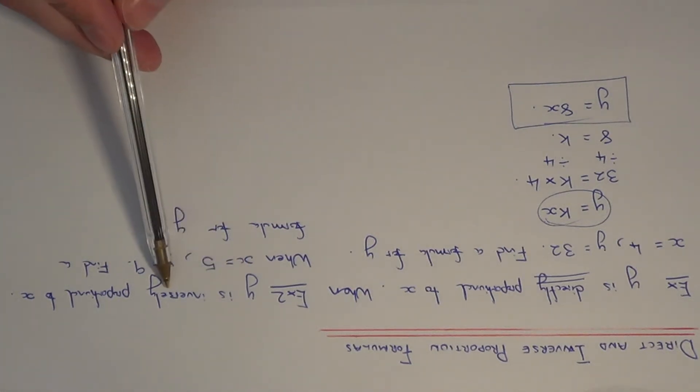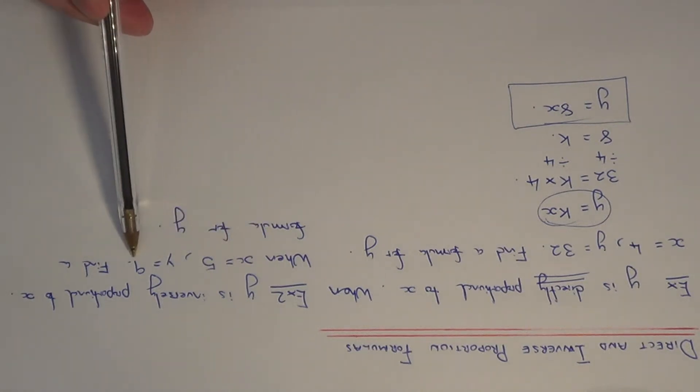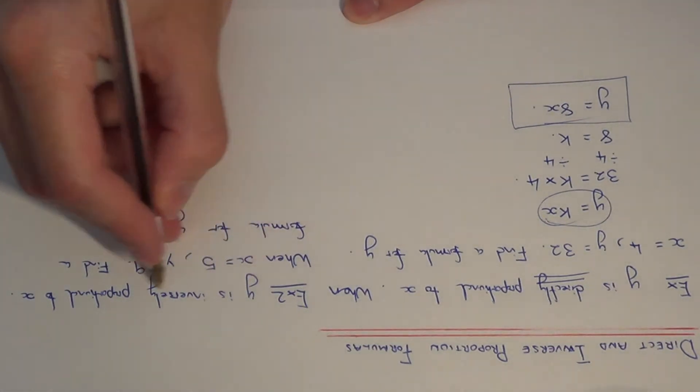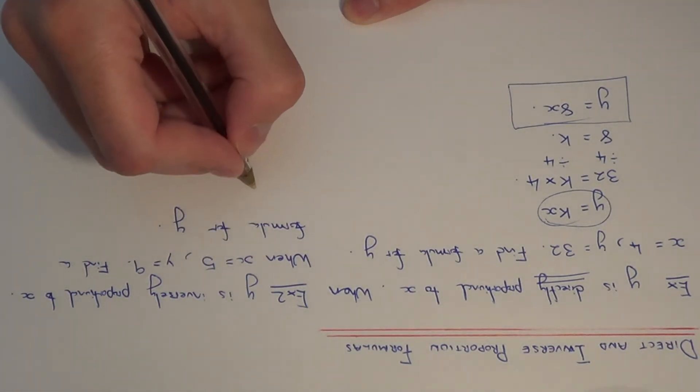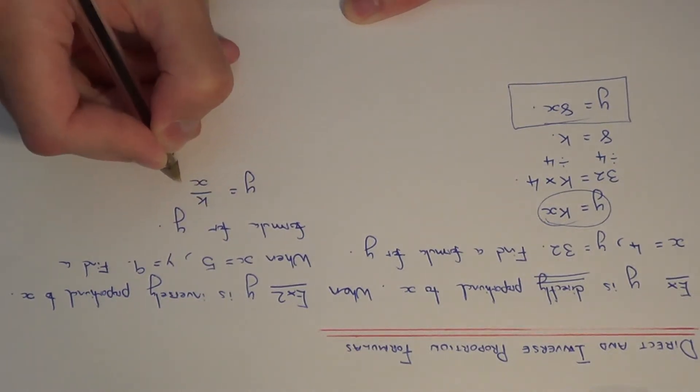This time we've got y is inversely proportional to x, and when x equals 5, y equals 9. Find a formula for y. If y is inversely proportional to x, this means our formula will take the shape of y equals k divided by x.